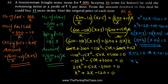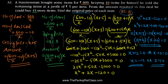So either X + 12 = 0, giving X = -12, or X - 10 = 0, giving X = 10. These are the two values of X, but since X is the original price of each item, it cannot be negative. Therefore X = 10, so each item originally cost rupees 10. Thank you very much.